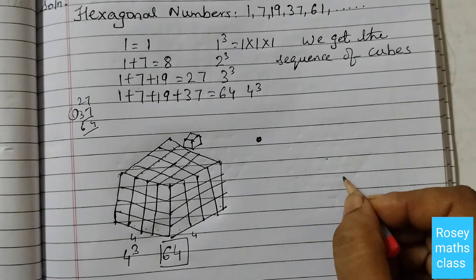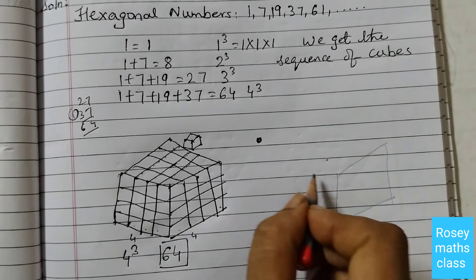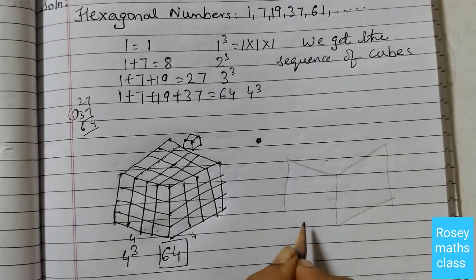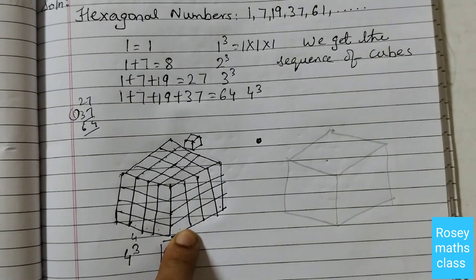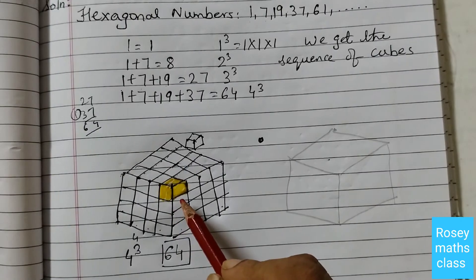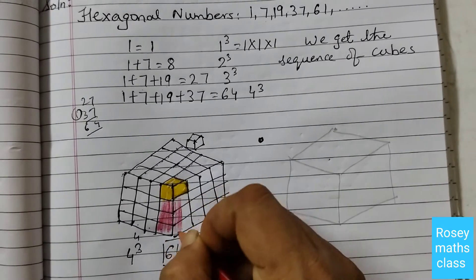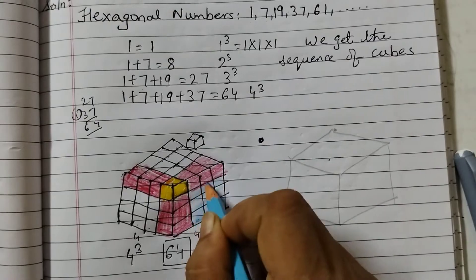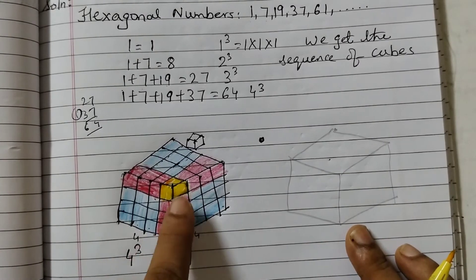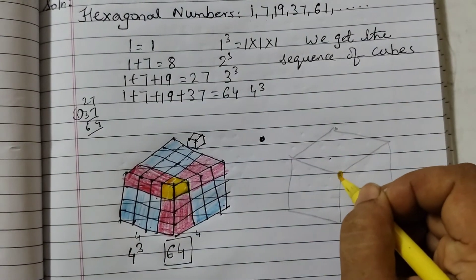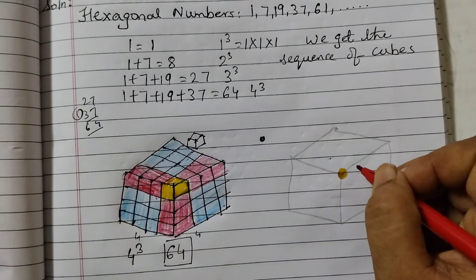I'm drawing with a pencil so I can erase it later. If you want, you can color it like in your textbook: color the center one yellow, then put red for the next layer, and the rest in blue. This yellow cube at the center represents one; then there are one, two, three red cubes on each edge — that's six red cubes total.